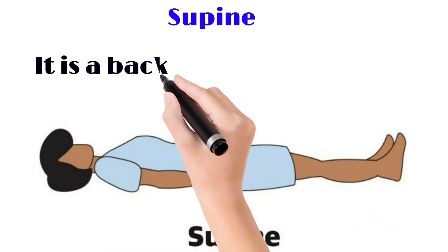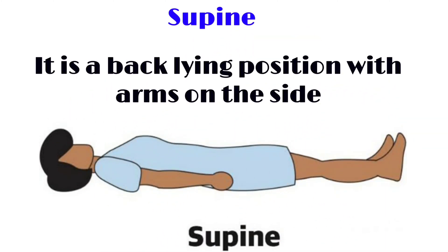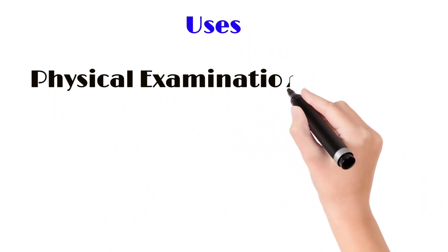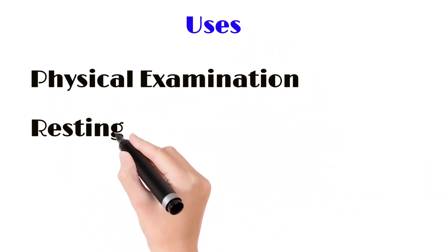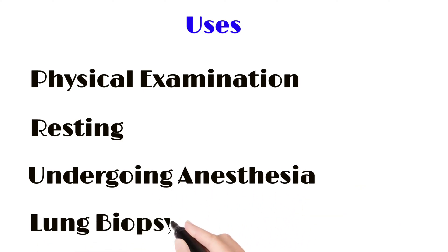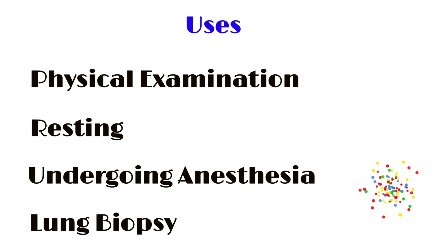First we will see the supine position. It is a back-lying position with arms on the side. Usually this position is used when you are sleeping, for physical examination, resting, undergoing anesthesia, and lung biopsy. These are the uses of the supine position.